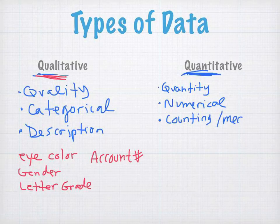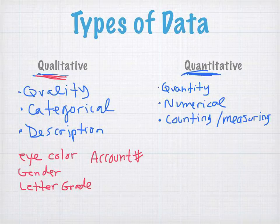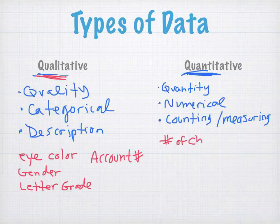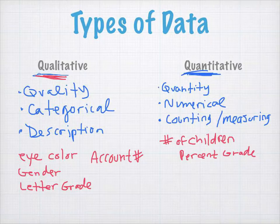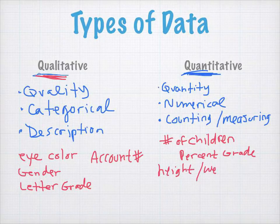You get quantitative results by counting or measuring. For example, if you count the number of children that a family has, that would be the result of counting. It could be your percent grade in statistics — not your letter grade, but the percentage. It could be your height or weight. These are things that are a quantity, and they are measured or you count them.